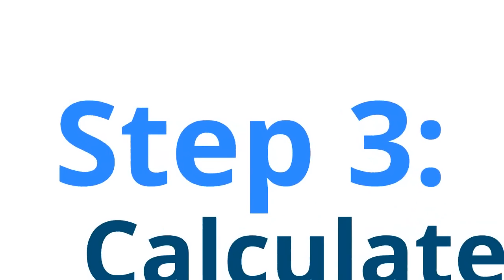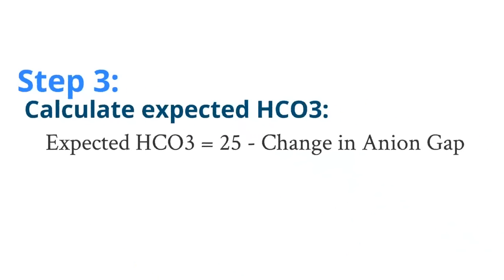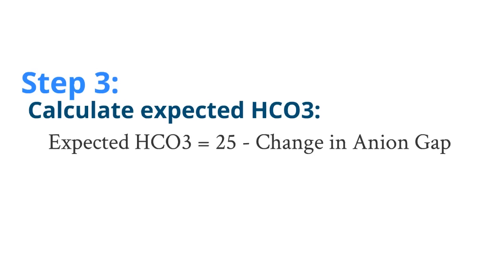Step 3: calculate the expected bicarb. Your expected bicarb can be calculated by taking 25 minus the change in anion gap. Once you've calculated the expected bicarb, we can now move to step 4.